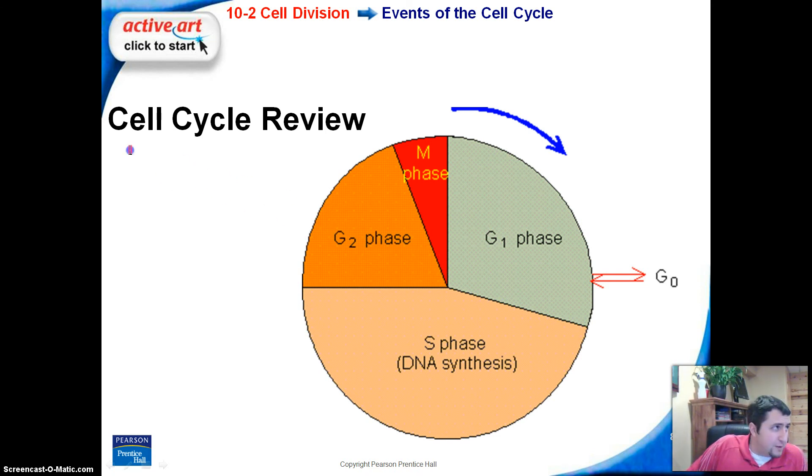Let's go ahead and review that a little bit. G1 phase, where we're going to get synthesizing new proteins and the cell is going to grow up. And then the S phase, we're going to get DNA synthesis, we're going to make a new copy. And then finally, the G2 phase, where we're going to make all the necessary organelles for the cell to survive on its own. And then the M phase is where the cell is actually going to divide.